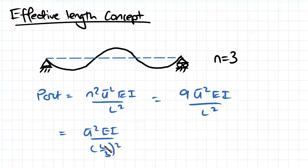Now this L over 3 is actually the distance between the changes in contraflexure on our beam here. So change in contraflexure means that we have zero bending moment at that point.